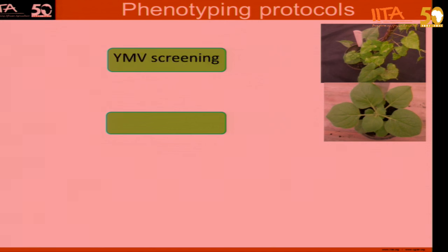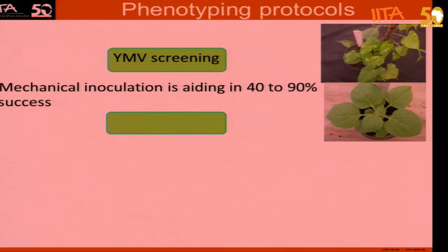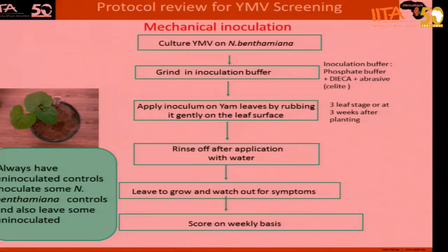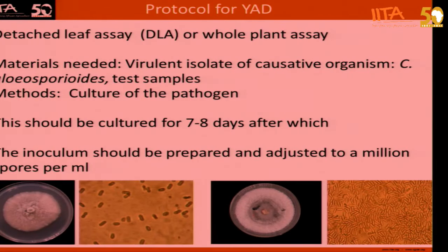For YMV screening, we have been using mechanical inoculation and we found that it is aiding us in having 40 to 90% success. We need all our test samples and we also need to culture the pathogen. We culture this seven to eight days prior so that the inoculum will be prepared, and then we adjust it to a million spores per milliliter, which is the recommended concentration for inoculation.